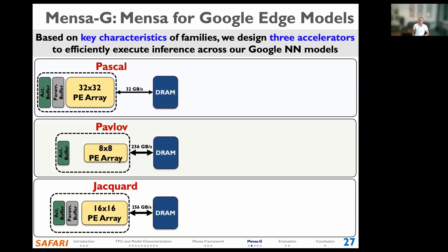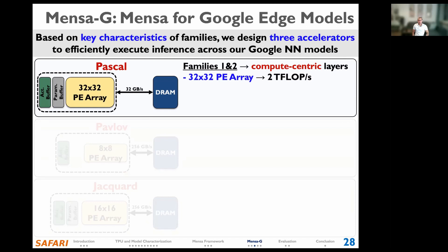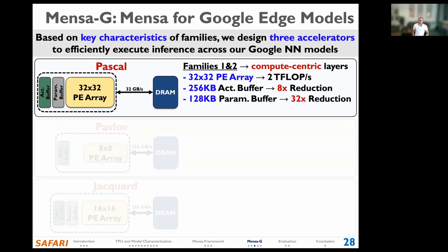Pascal is a compute-centric accelerator designed for families one and two. It has a 32x32 processing element array, since layers from these families perform a large number of MAC operations in parallel. We reduce the activation buffer from 2 MB in the Edge TPU to 256 KB in Pascal, and the parameter buffer from 4 MB to 128 KB, because layers in families one and two have small parameter footprints. Given the low off-chip memory bandwidth requirement of Pascal, we keep the accelerator in the CPU die.